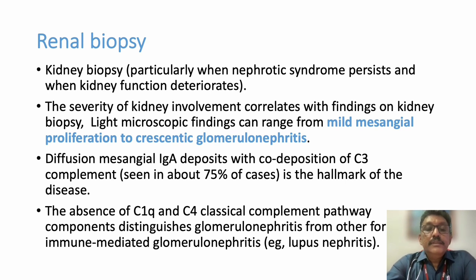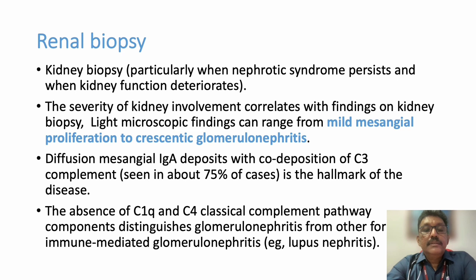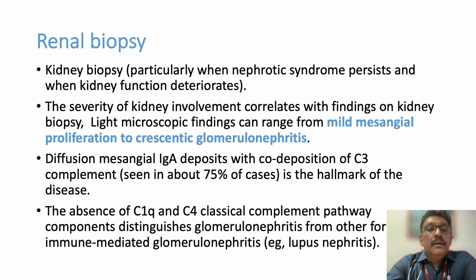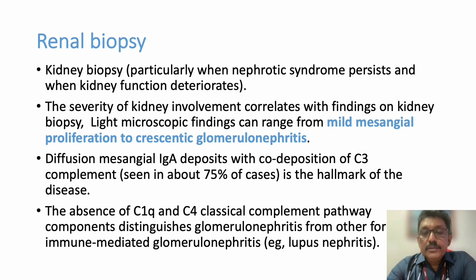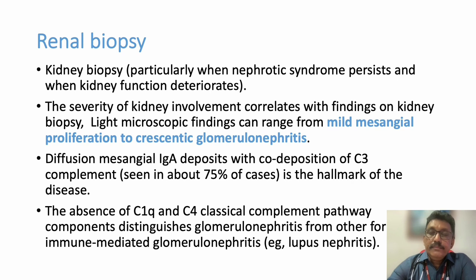Once the kidneys are involved, investigations include creatinine, urea, and complement levels - low complement levels are classic since this is a complement-mediated injury. Kidney biopsy may show mild mesangial proliferation to crescentic glomerulonephritis, and should be performed if there is elevated urea and creatinine or persistent proteinuria.